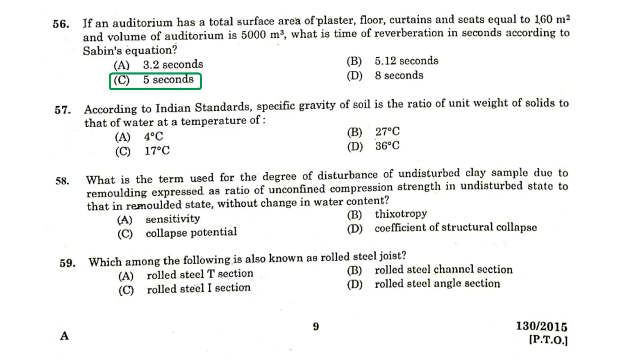According to Indian standards, specific gravity of soil is the ratio of unit weight of solids to that of water at a temperature of 27 degrees Celsius. What is the term used for the degree of disturbance of undisturbed clay sample due to remolding expressed as a ratio of unconfined compression strength in undisturbed state to that in remolded state without any change in the water content? Sensitivity. Which among the following is also known as a rolled steel joist? A rolled steel I-section.